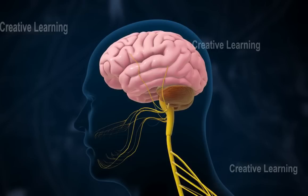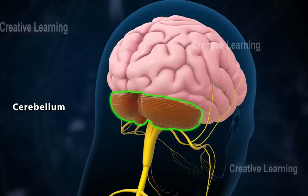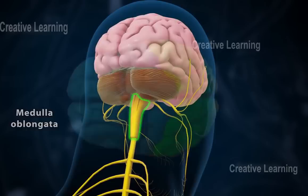The brain is located in the cranium of the skull. It is made of three main parts: the cerebrum, cerebellum, and medulla oblongata.